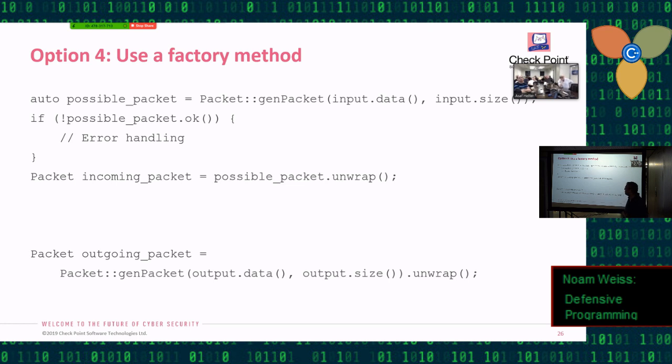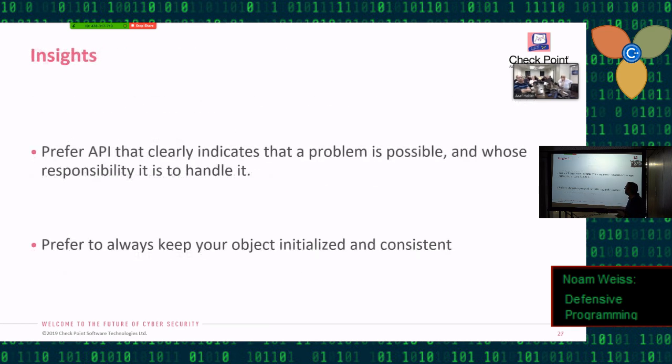So the second section really tells me as a reviewer that whoever wrote this line is certain and is absolutely convinced that this cannot fail this is fine. So again the main insight is API that clearly defines and declares when an error happens and who's responsible ensuring that the error will make the code easier to maintain and always prefer to keep your object initialized and consistent to save any troubles that you may have.